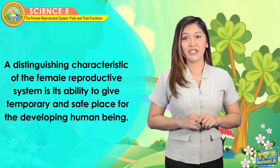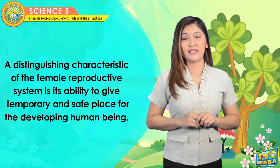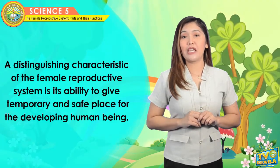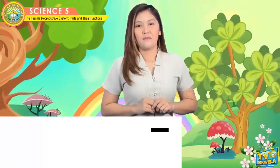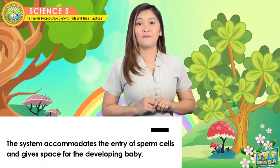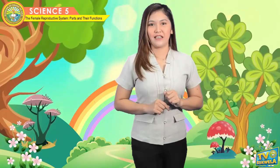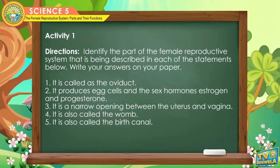A distinguishing characteristic of the female reproductive system is its ability to give a temporary and safe place for the developing human being. The system accommodates the entry of sperm cells and gives space for the developing baby. I want you to open your module on page 9. Take a look at what's in. Now, try to answer the first activity. Direction: Identify the part of the female reproductive system that is being described in each of the statements below, and write your answers on your paper.